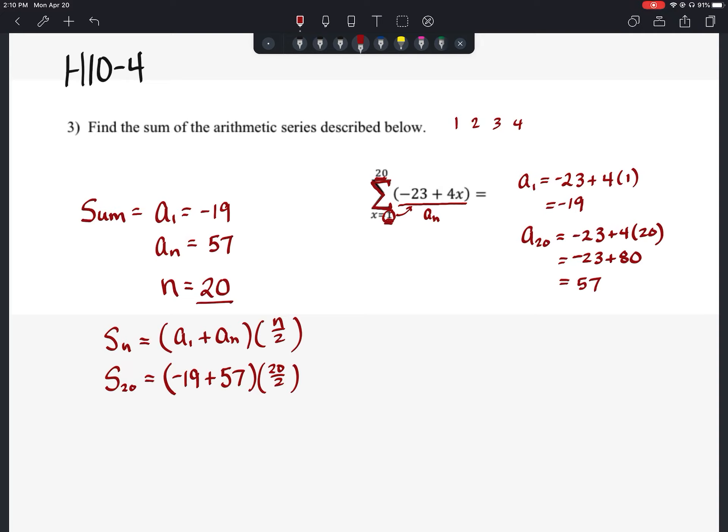Negative 19 plus 57 should be 38 if I can still do mental math. And we're going to multiply that by 20 divided by 2 is 10. So our answer should end up being 380. And that is the sum of our first 20 terms.